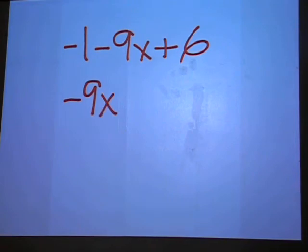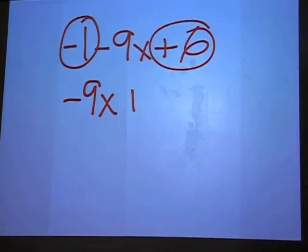Also, if you have a negative 1 minus 9x plus 6, it's the minus 9x that stays the same. But you have a negative 1 plus 6. That's a plus 5. So you end up with negative 9x plus 5.